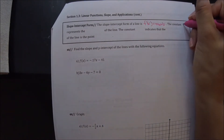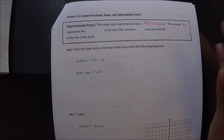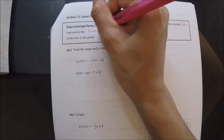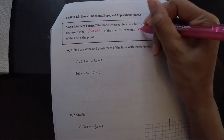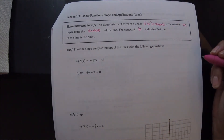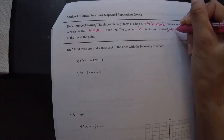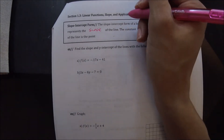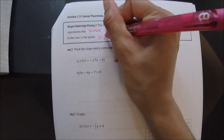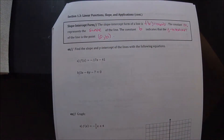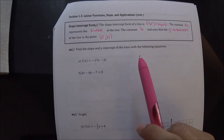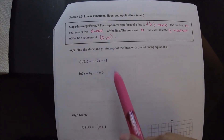The constant m represents the slope of the line, and the constant b indicates that the y-intercept of the line is going to be the point zero comma b, because if you plug zero in for x, you just get b left. So let's use this information to do these examples.